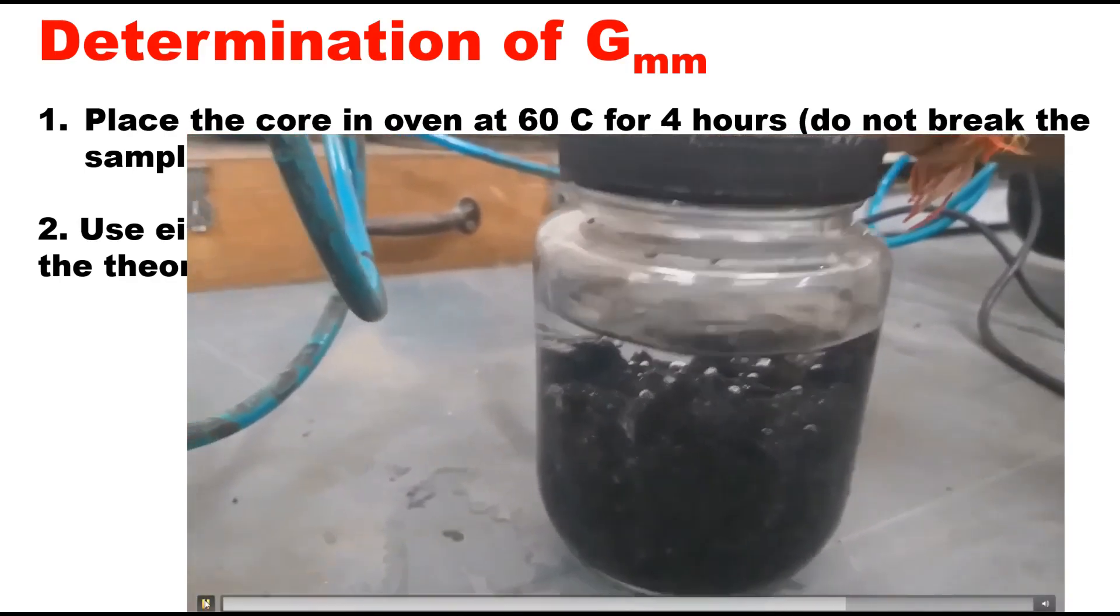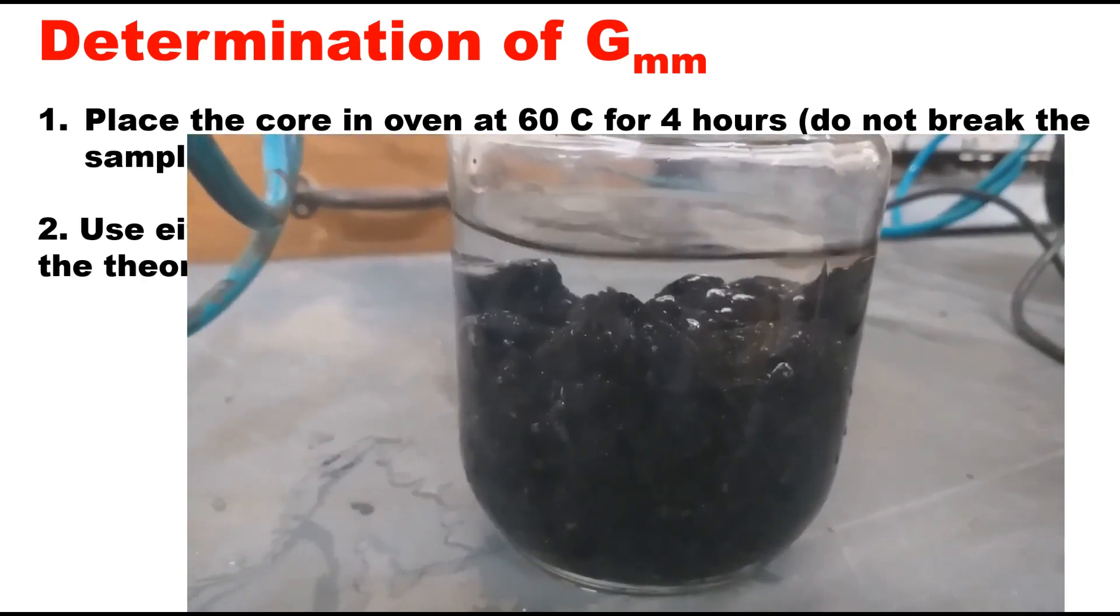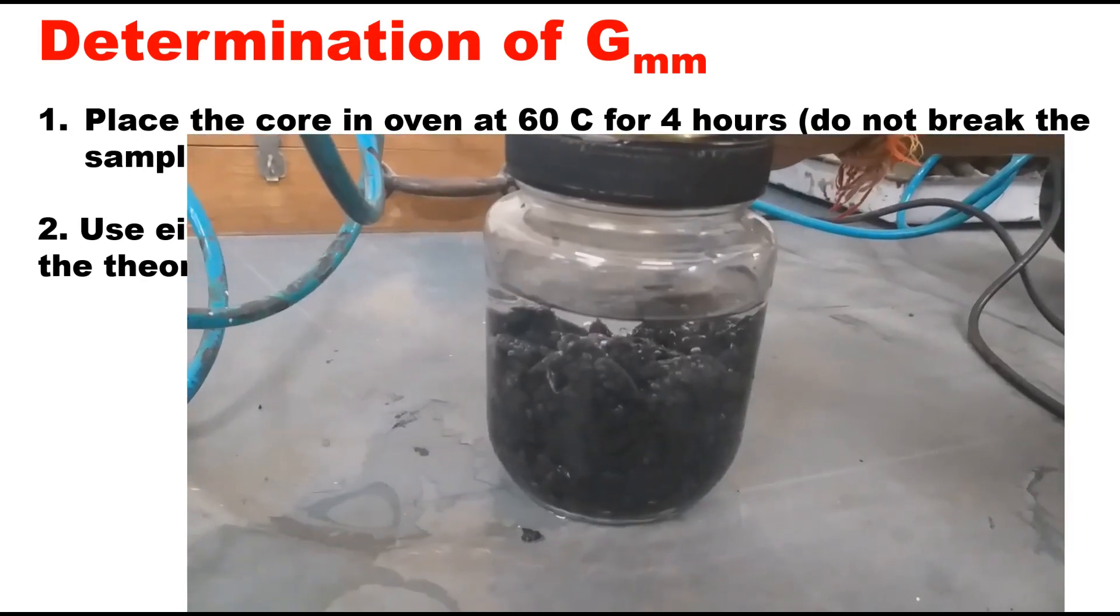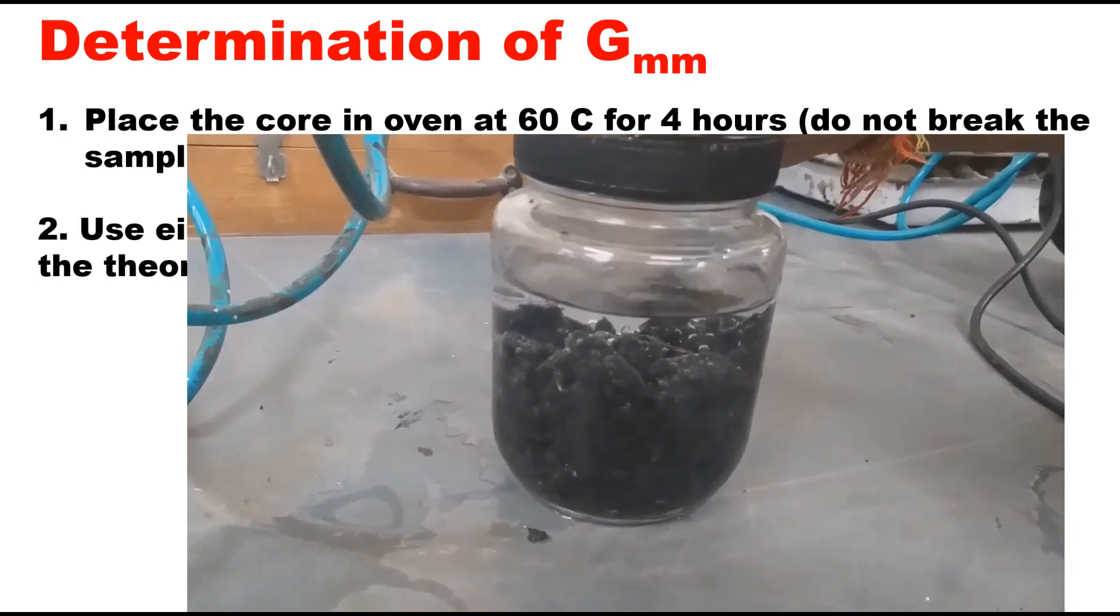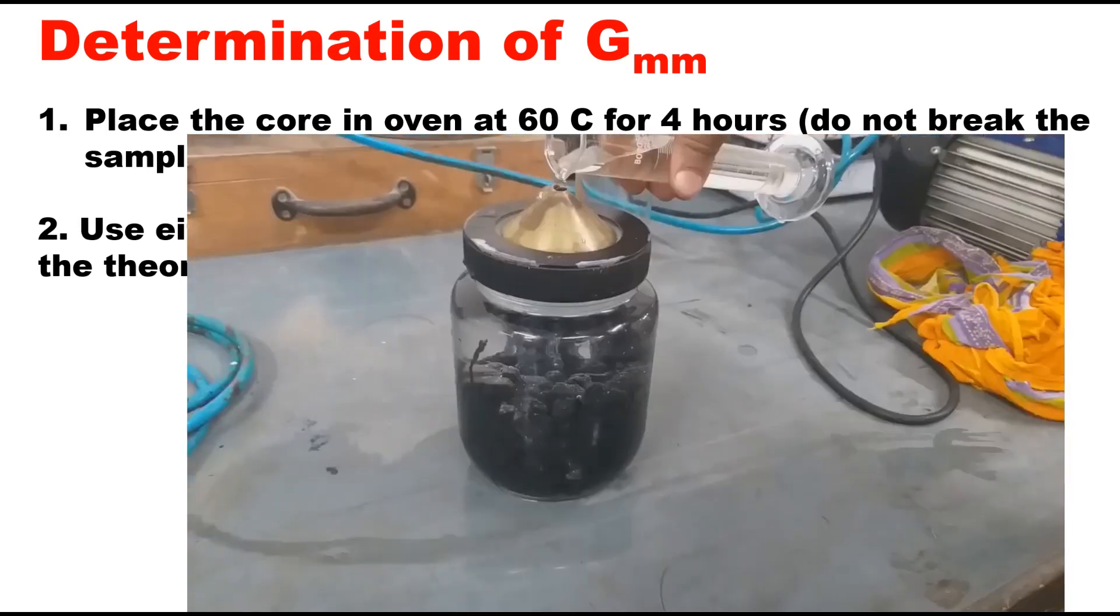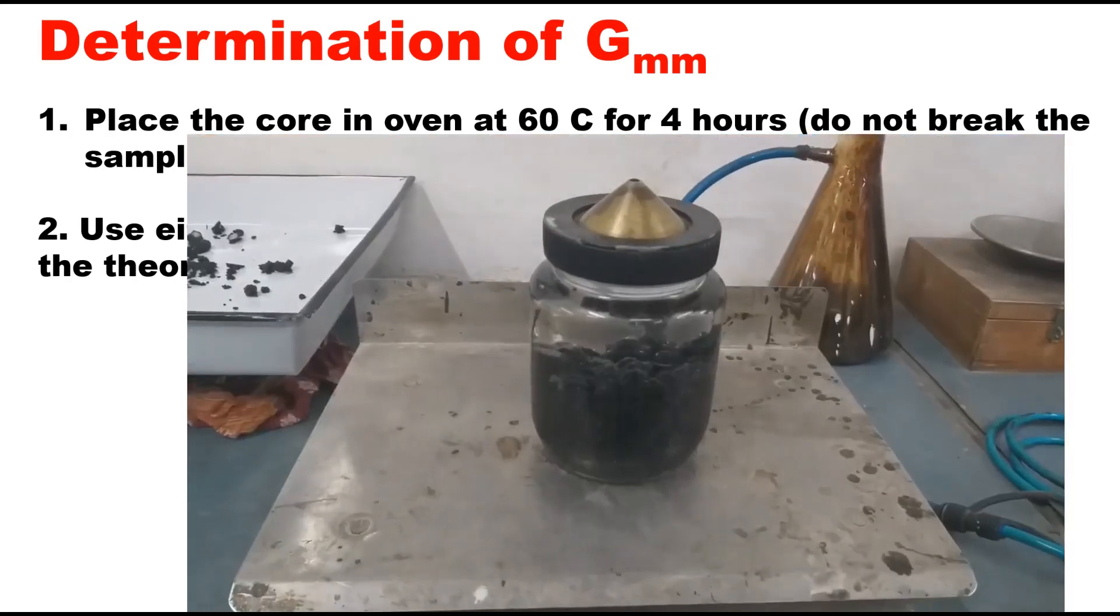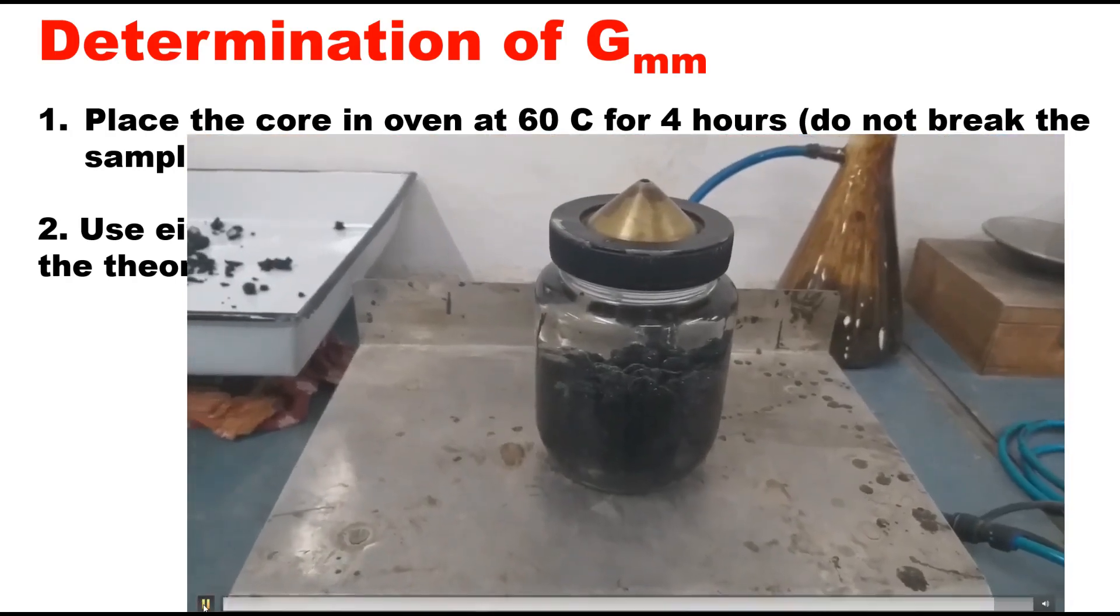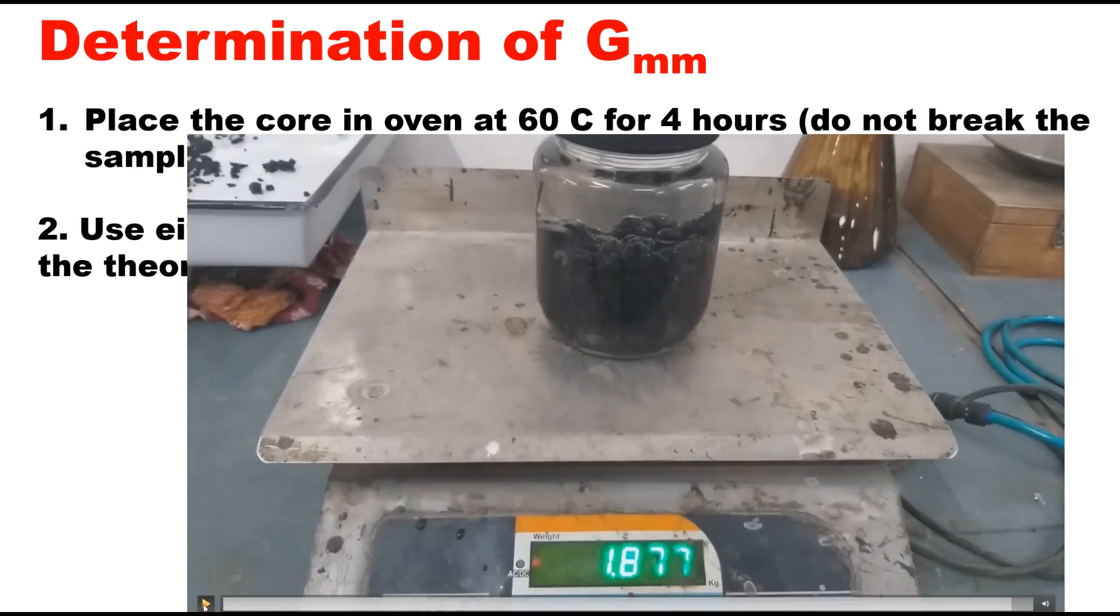Once it is done, then you can fill this bottle with water till its brim. After that you take weight of the pycnometer which is now filled with material plus water, and the air which is entrapped in the mixture is completely removed. This is the final weight.